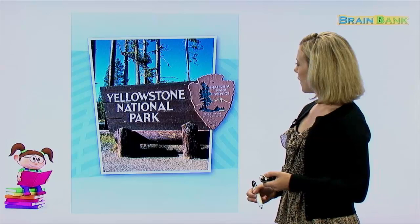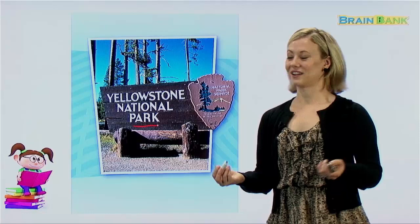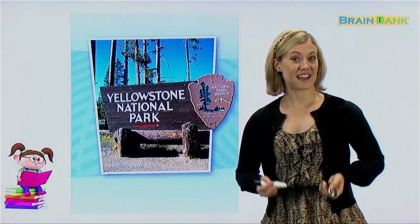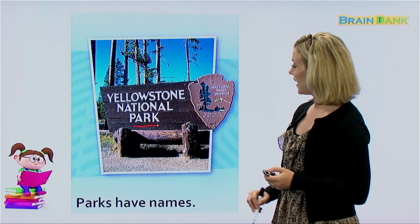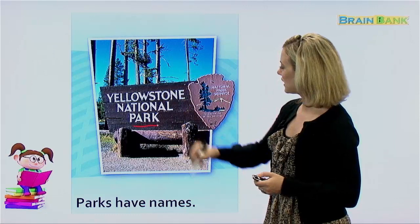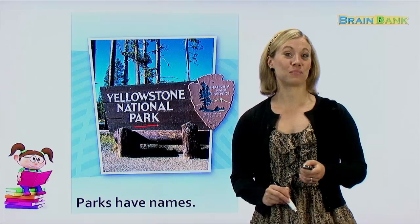Now, what can we guess this is? I don't see a river, and I don't see a mountain. This is a park — this is Yellowstone National Park. So even parks have names. Parks have names — let's read it together. Parks have names, yes they do. And this is a very famous park in the United States. There are beautiful trees, there are mountains in the park, and there are some wild animals that are protected here. So Yellowstone National Park is very famous.